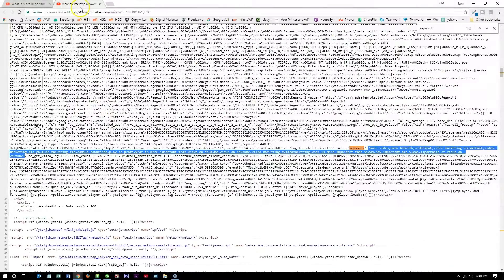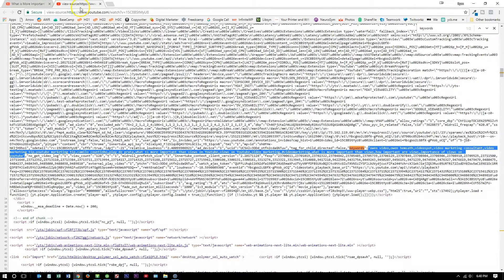On my computer using Chrome, a new tab opens up and what you'll see is the source code for the video including the tag information. To find the tags, click Control F to bring up a search box and type in keywords. This will bring you to the section on the page where the tags are.